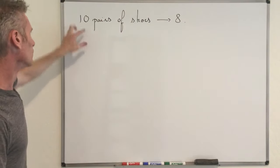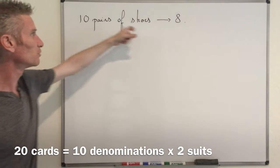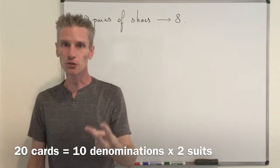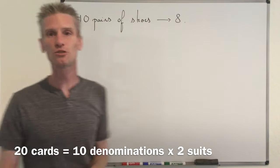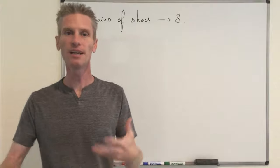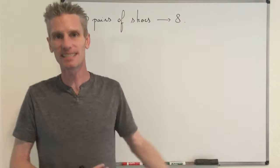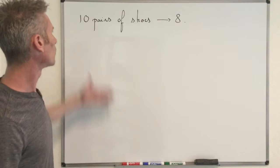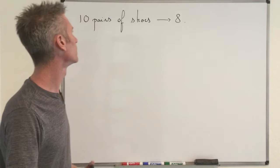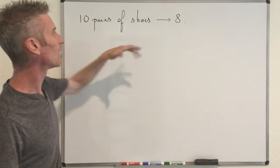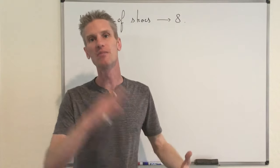But it's really the same thing. Instead of having 13 denominations, you are going to have 10 denominations. And instead of having four suits, you are going to have only two suits, corresponding to the left foot and the right foot. You just slightly change the numbers, but it's exactly the same as poker. So what we need to compute is very similar to poker probabilities, using a deck of 20 cards divided into 10 denominations times two suits.